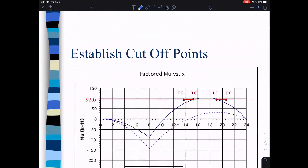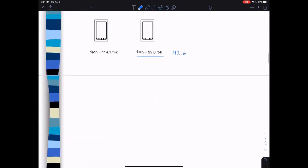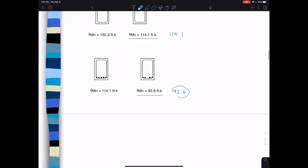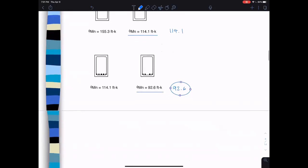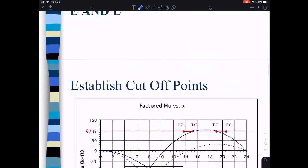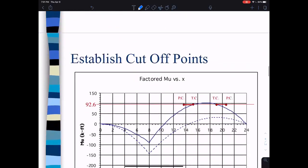Establish the theoretical cutoff points and check ld. So the reduced positive was 92.6. What I did was I came out here, eyeballed 92.6, went across, and found where they intersected the moment diagram, and just drew them in.